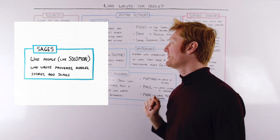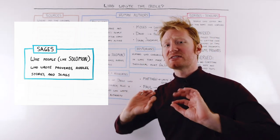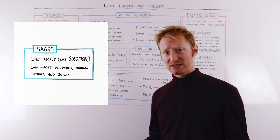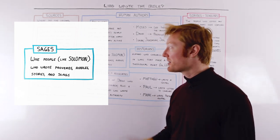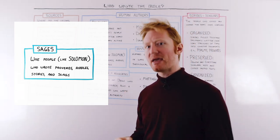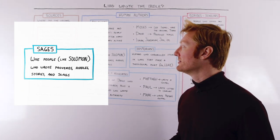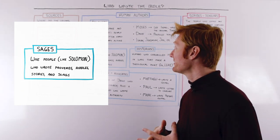Then we have a group of people that I'm calling the sages. These are wise people, the most famous of whom was King Solomon. They wrote proverbs, riddles, stories, and songs to help people make just and godly decisions as they were going about their lives.